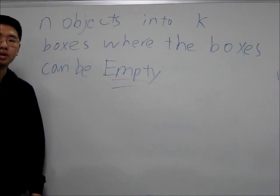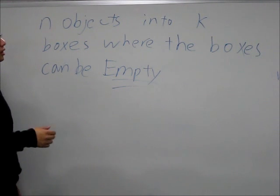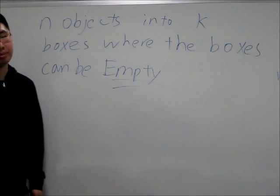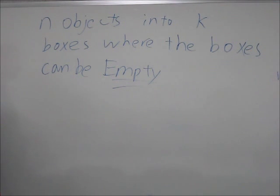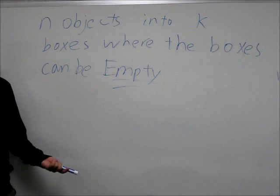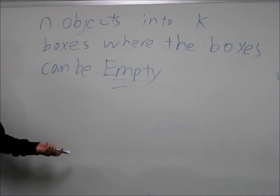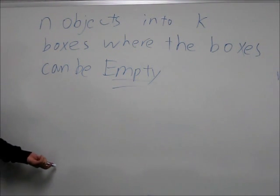Stirling Numbers say that we can put n objects into k non-empty boxes. But what if we say that the boxes can be empty? In that case, the Stirling Numbers don't actually work because there will be boxes where nothing is put in them.